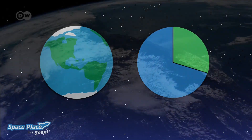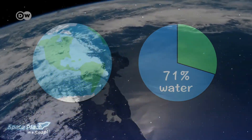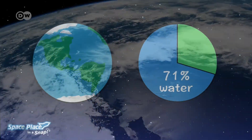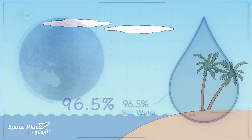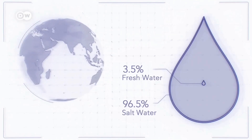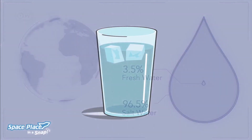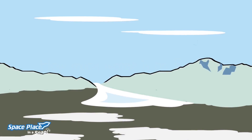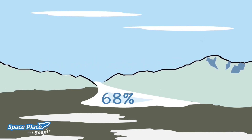So how much water is on Earth? Water covers 71% of Earth's surface, and of all of it, 96.5% is salt water. Just 3.5% of the water on Earth is fresh water that we can drink.